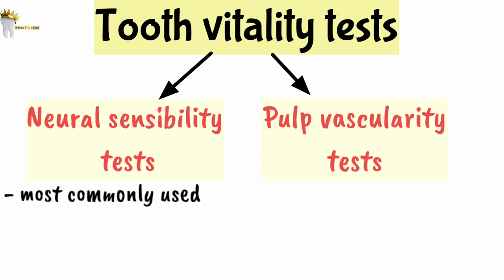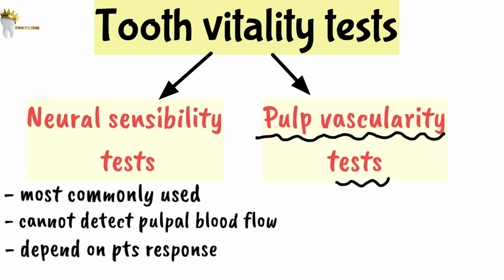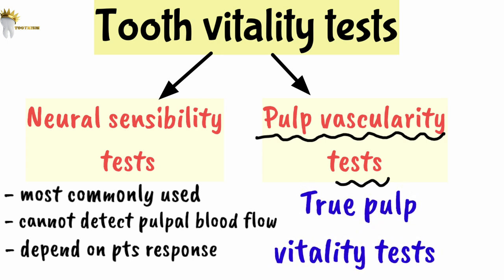Neural sensibility tests are most commonly used, but they cannot detect pulpal blood flow and are dependent on patient responses and the dentist's interpretations. Pulp vascularity tests are actually true pulp vitality tests because they detect blood flow of the pulp without relying on patient responses, providing more accurate pulp status.